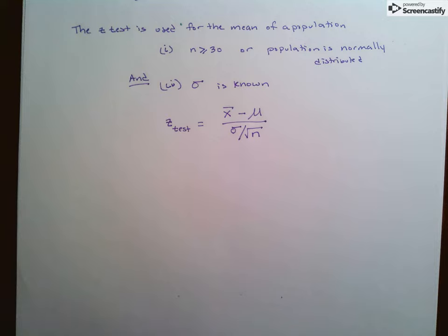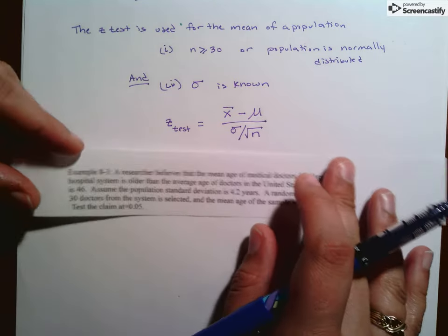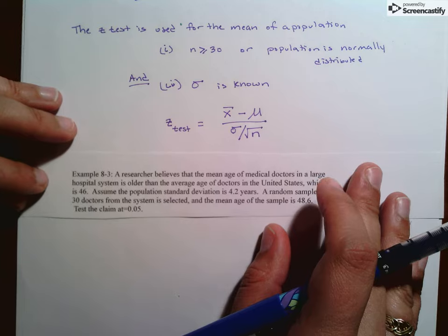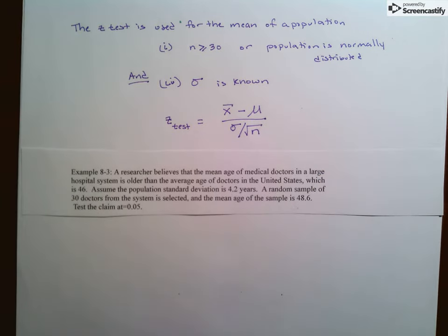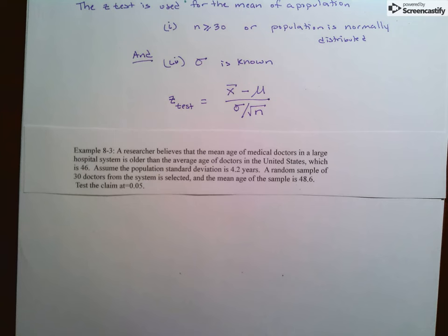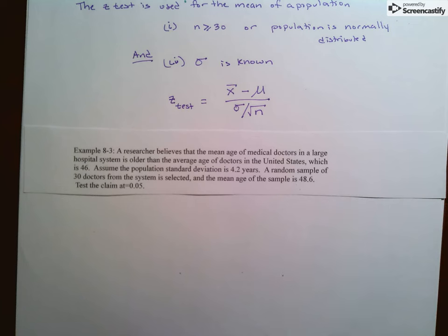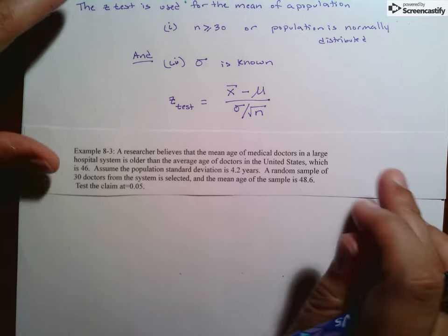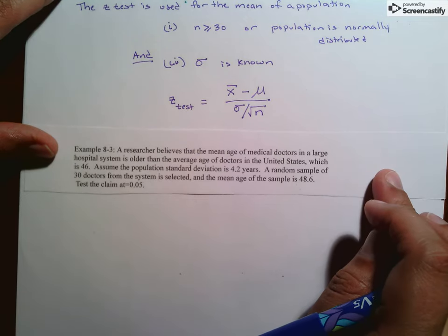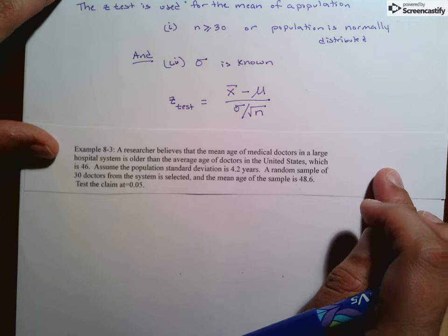So we're going to start with an example. A researcher believes that the mean age of medical doctors in a large hospital system is older than the average age of doctors in the United States, which is 46. Assume the population standard deviation is 4.2 years. A random sample of 30 doctors from the system is selected, and the mean age of the sample is 48.6. Test the claim at a significance level of alpha equals 0.05.